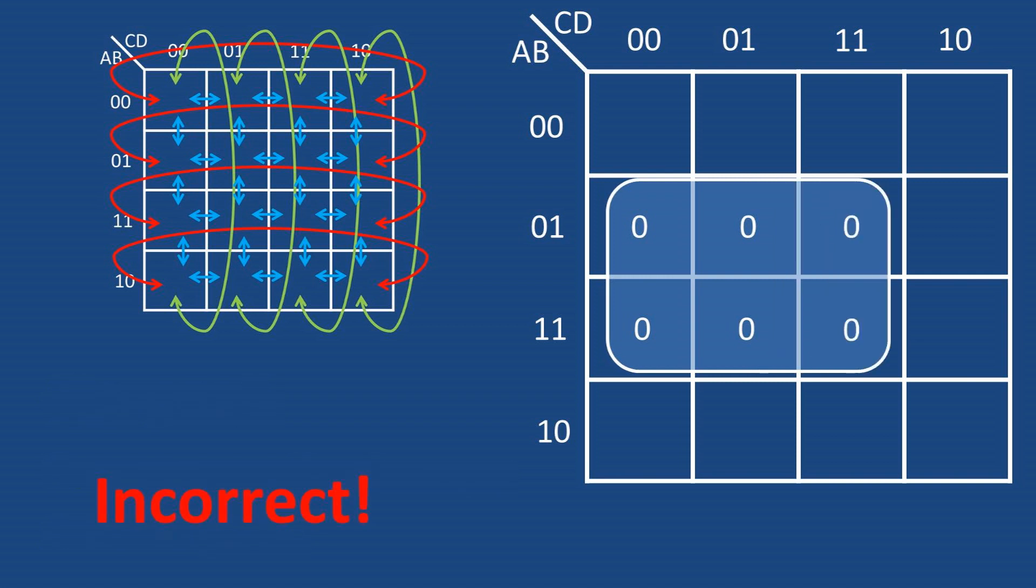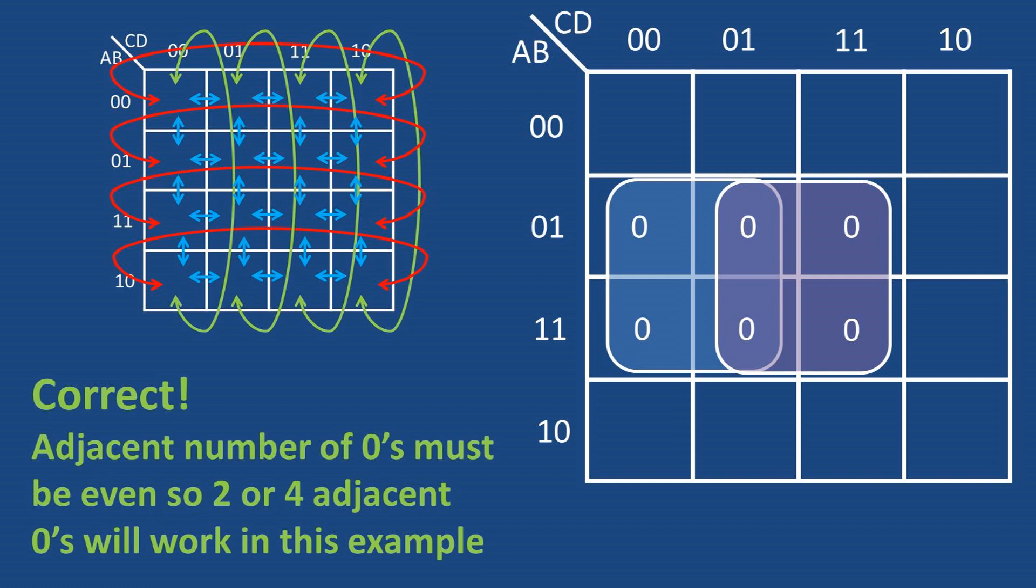Now if we have a three column, two row set of zeros, would we group it like this? No, in order to group a set of zeros, the adjacent number of zeros must be even.